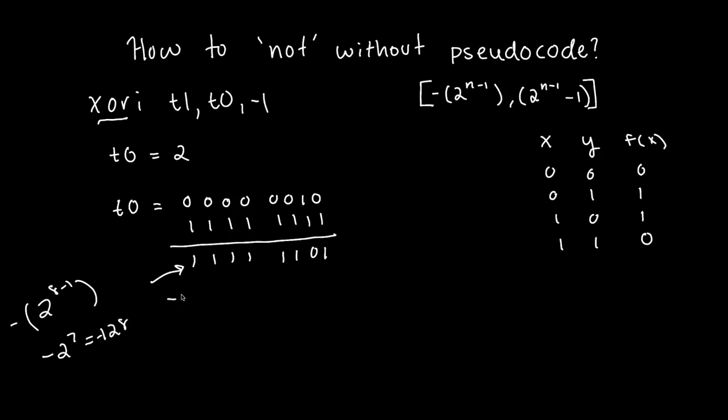So this becomes negative 128 plus 2 to the power of 6, which is 64, plus 2 to the power of 5, which is 32, 2 to the power of 4, 16, 2 to the power of 3, which is 8, and just going down, 2 to the power of 2 is 4. We don't have to worry about this one, so it's just plus 0, and then plus 1, because anything to the power of 0 is just 1. So when we add all these values together, something strange happens. We get negative 3.